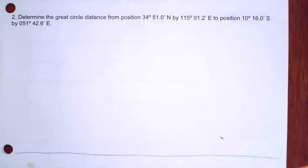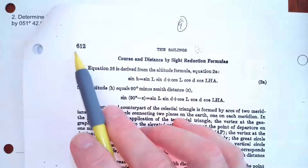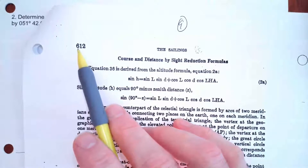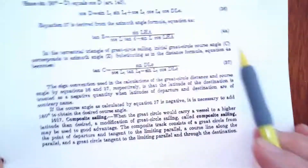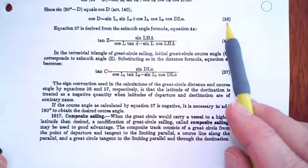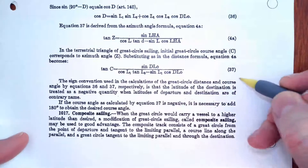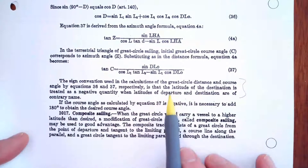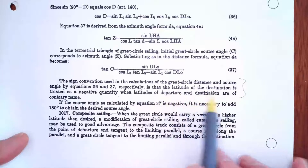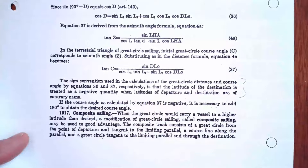As always with great circle distance, the first thing I'm going to do is go to Bowditch page 612 — this is Bowditch 1981 Volume 2, the Bowditch that's going to be in the exam room for the US Coast Guard license. I'm going to find Formula 36, that's the cosine D formula, and just after Formula 37 are the rules for 36 and 37. That rule basically says that latitude is treated as a negative quantity when latitudes of departure and destination are contrary.